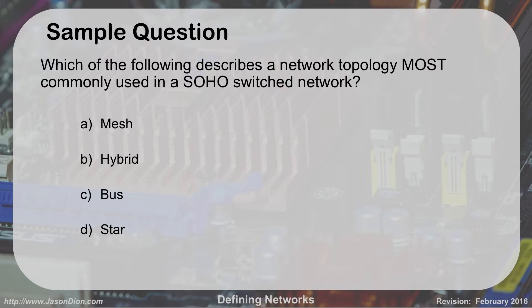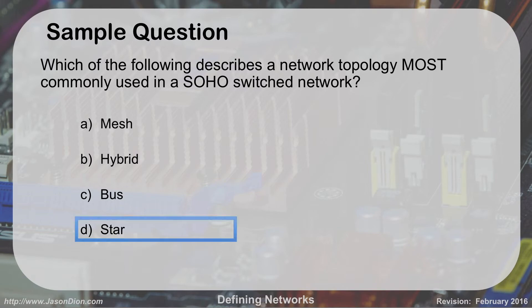Which of these describes the network topology most commonly used in small office, home office switched networks: mesh, hybrid, bus, or star? The star network is the most common, and it is the most often used in small office and home office networks, as well as in large corporations. You're going to find star networks everywhere.